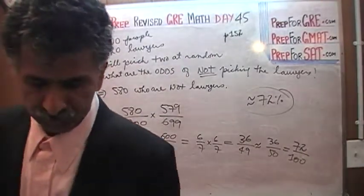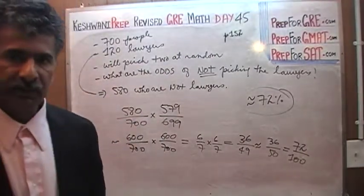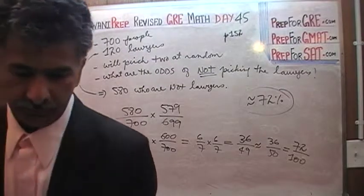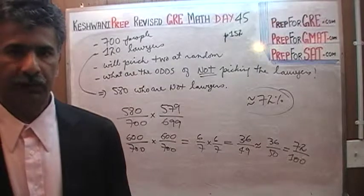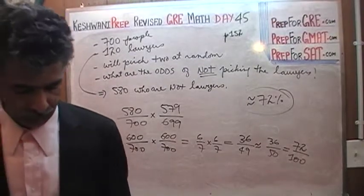So the answer is approximately 72%. The odds are approximately 72% that the two members we picked at random out of the group of 700 will not be lawyers. The answer is C.